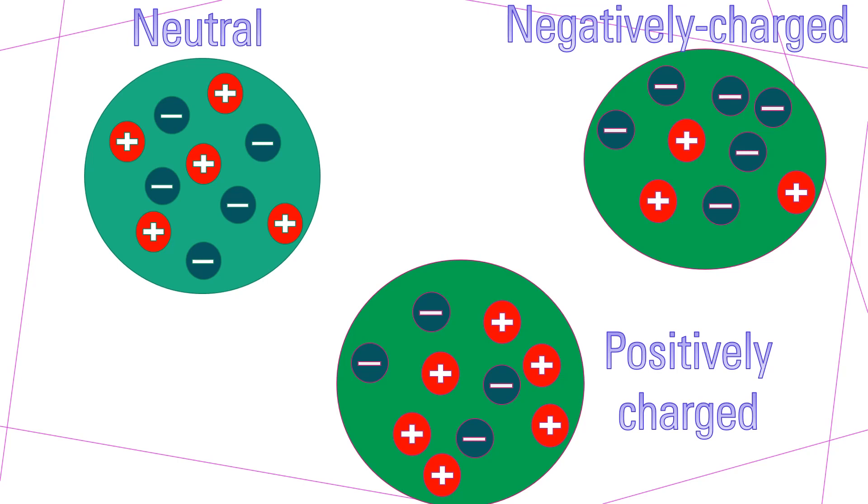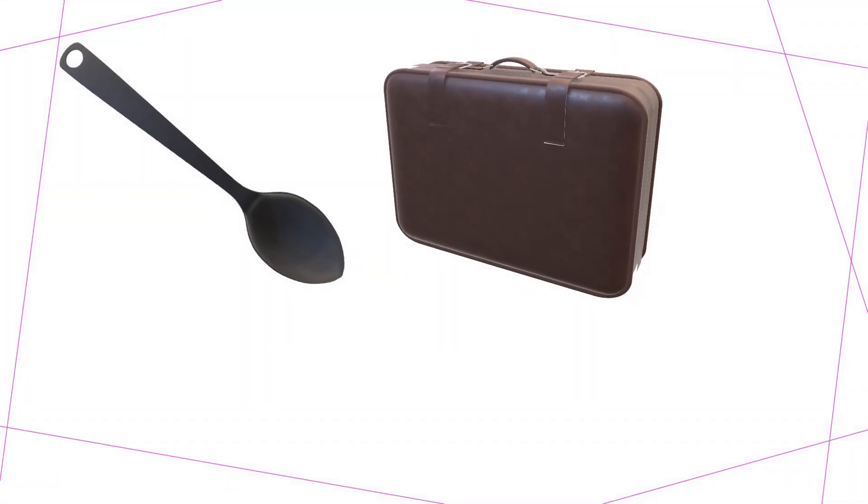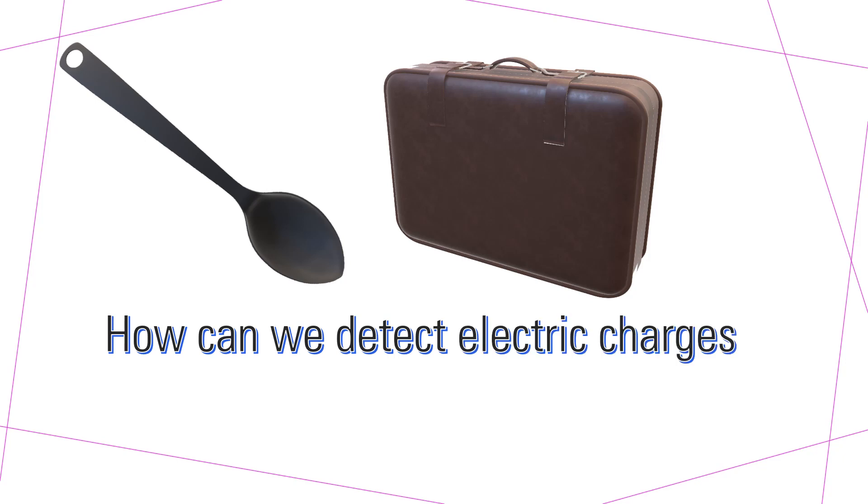If you're not sure how to differentiate whether an object is negatively or positively charged, you can look back at my previous video. But we cannot tell if an object is neutral or charged just by looking at it. My question is: how can we detect electric charges on an object?